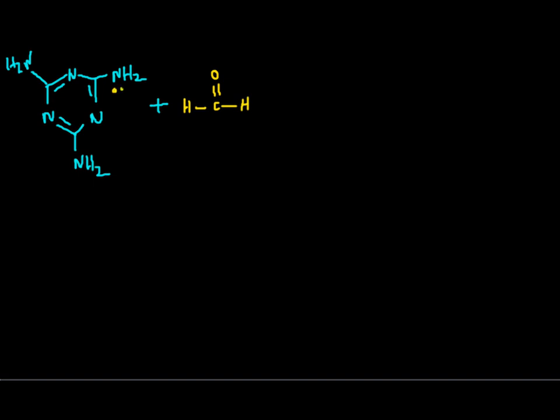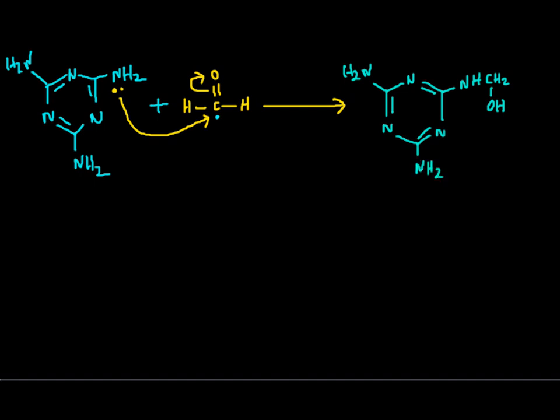Now nitrogen is having a lone pair and there is a nucleophilic center here. This is the nucleophilic center, so nitrogen just attacks over here and this one opens up. Finally we have such kind of compound - melamine. So this is the monomer which is used for making melamine formaldehyde polymer.